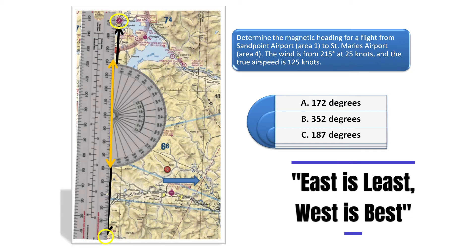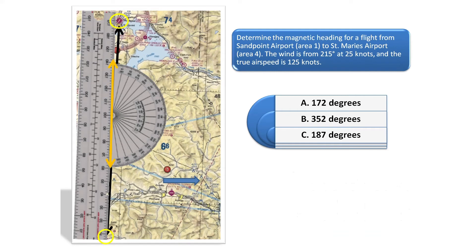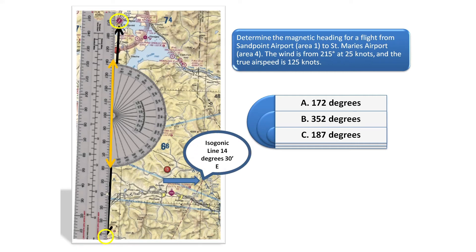One commonly used saying is east is least, west is best. This means that a pilot needs to subtract for an easterly variation and add for a westerly variation. It is not displayed in the chart, but the dashed line represents an easterly variation of 14 degrees and 30 minutes. Isogonic lines are always shown in VFR sectional charts.